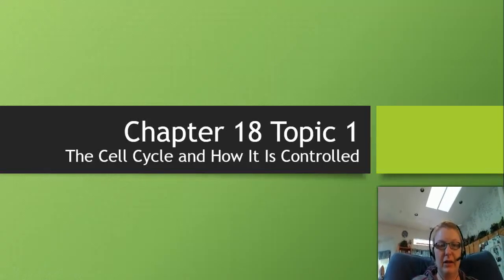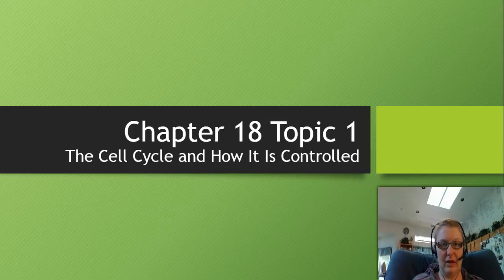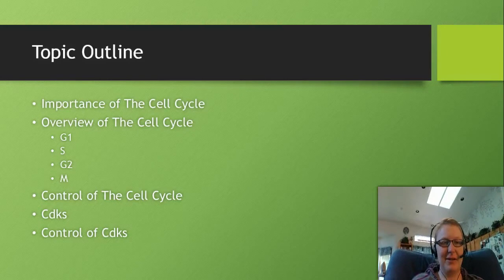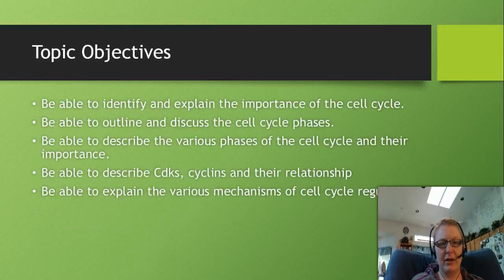Welcome to Chapter 18, Topic 1. This chapter has three topics. In this first topic we're going to talk about the cell cycle and how it is controlled, then we'll dive into the M phase specifically in its own topic, and then we're going to talk about the control of the cell cycle - CDKs and control of CDKs. Here are our objectives for this topic.